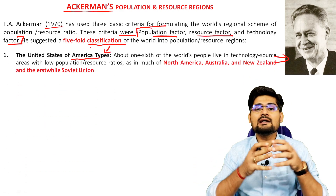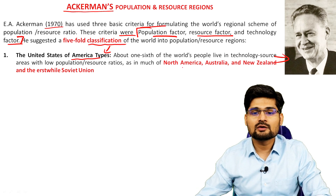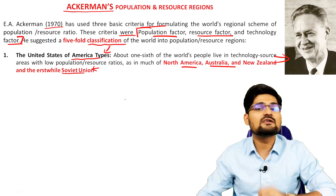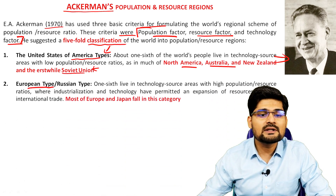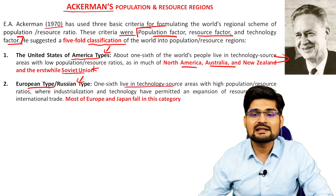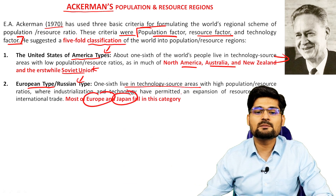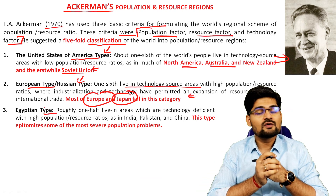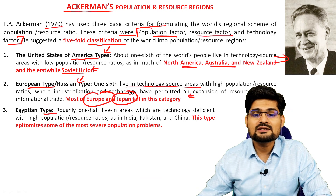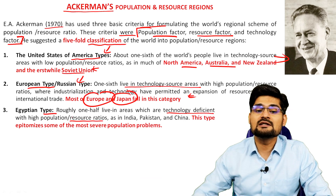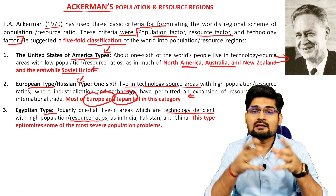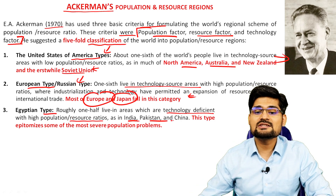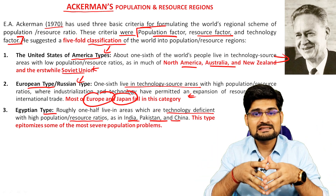The first type is the USA type — countries like North America, Australia, New Zealand, and the erstwhile Soviet Union — where population, resources, and technology are at the same level. The second is the European or Russian type, where most of Europe and Japan fall, with high technology and resource areas. The third is the Egyptian type, where there is technology deficiency and high population-resource ratios, meaning per capita resource availability is low. India, Pakistan, and China fall under this category.